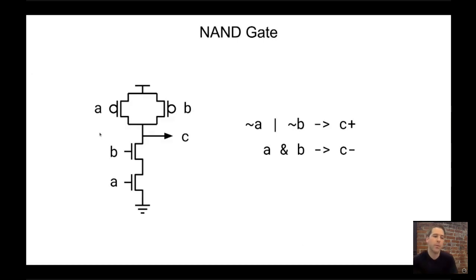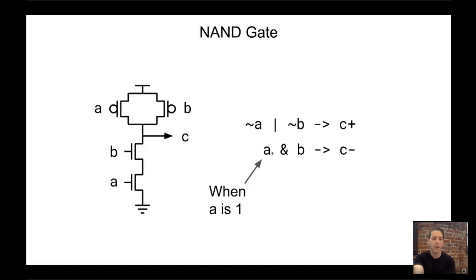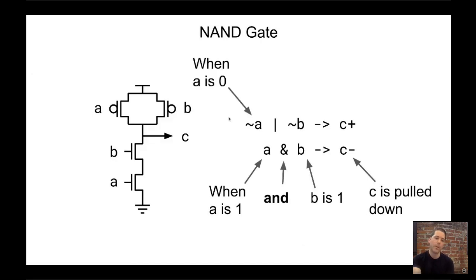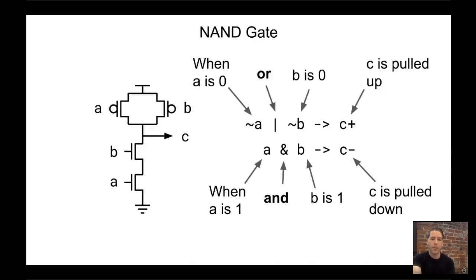We can represent more complicated gates like the NAND gate. With two NMOS transistors in series at the bottom, both have to be high for both channels to be connected and for C to be connected to ground — represented by: if A is 1 and B is 1, then C is pulled down. At the top, two PMOS transistors in parallel mean only one has to be connected for C to be connected to source — represented by: if A is zero or B is zero, then C is pulled up.